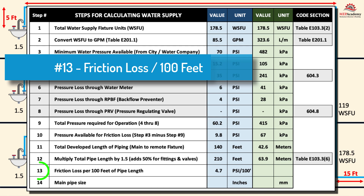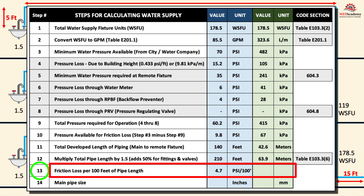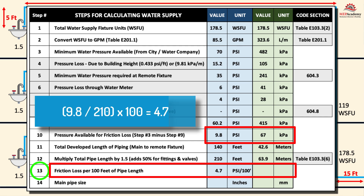Step 13: Determine the Friction Loss per 100 Feet. This calculation determines the leftover pressure that can be used to overcome friction loss in the pipes and fittings. From Step 10, there is 9.8 PSI or 67 kPa available for friction loss. The calculation is: 9.8 ÷ 210 feet × 100 = 4.7 PSI per 100 feet.